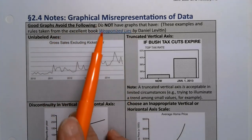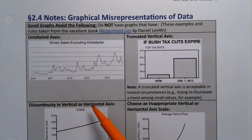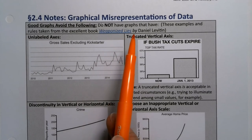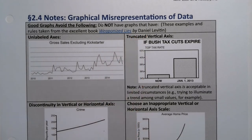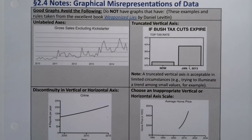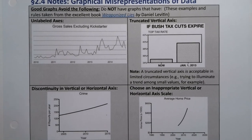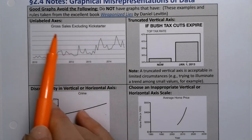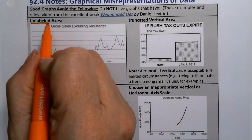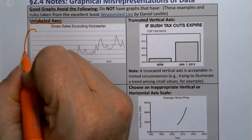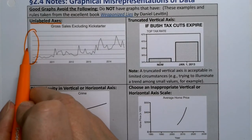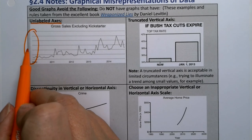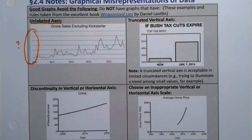Good graphs avoid the following — do not have these in a good graph. These examples are from a book called Weaponized Lies by Daniel Levitin, which is a very good book. This first one is gross sales excluding Kickstarter, and you'll notice there's no label on the axis. Where's the label? What are we looking at — is it millions? Is it hundreds of thousands? Who knows? It's unlabeled.